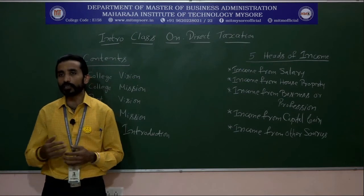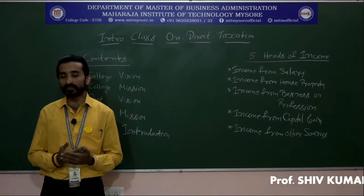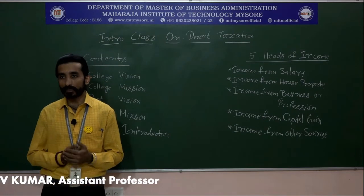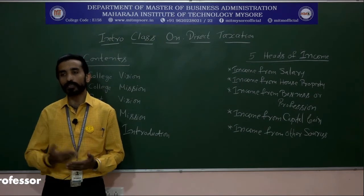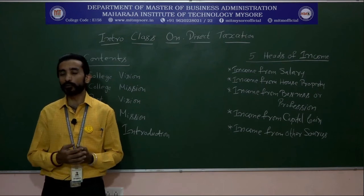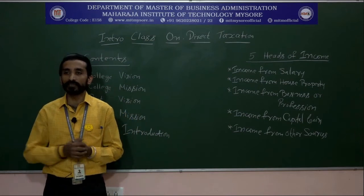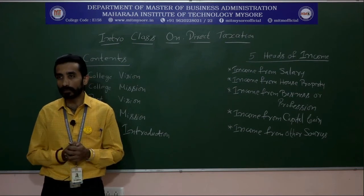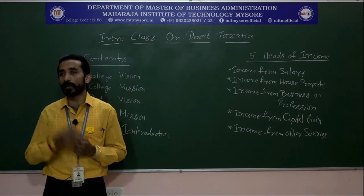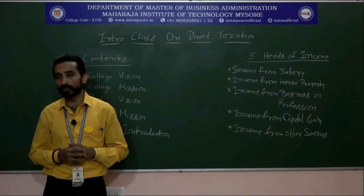Unit 1 covers the Income Tax Act 1961, basic concepts and definitions, capital expenditure and capital receipts, capital revenue, basis of charge, and scope of total income. Most importantly, from an examination viewpoint, it covers residential status and incidence of tax, income that does not form total income under Section 10, and also tax planning, tax evasion, and tax management. Numerical problems in this unit are based on the residential status of an individual.